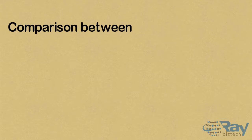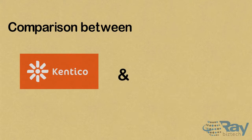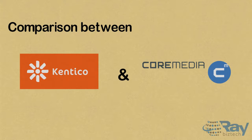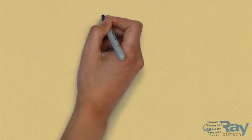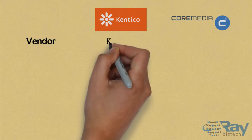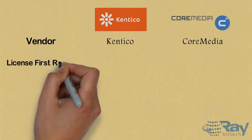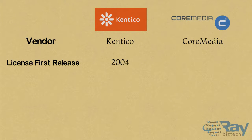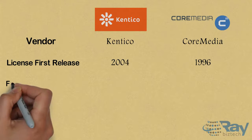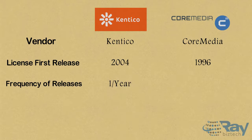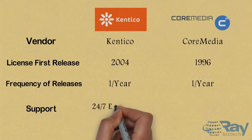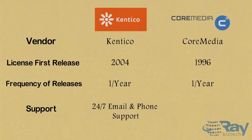Comparison between Kentico and Core Media. The vendor for Kentico is Kentico and the vendor for Core Media is Core Media. License first release for Kentico was in 2004 and for Core Media in 1996. Frequency of releases: Kentico one per year, Core Media one per year. Support for Kentico: 24/7 email and phone support. Core Media: 24/7 email and phone support.